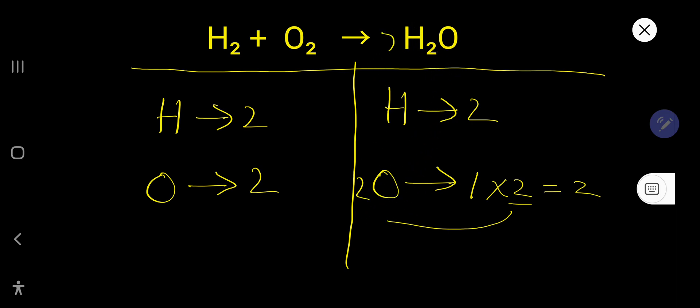This is a subscript. So the number of hydrogen now: 2 times 2, that is 4. You have to multiply coefficient times subscript. The number of oxygen here: 2.